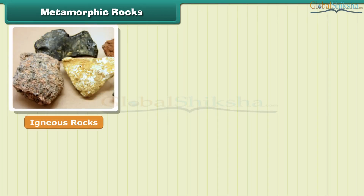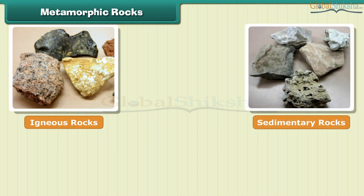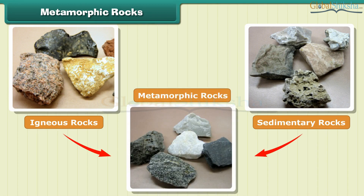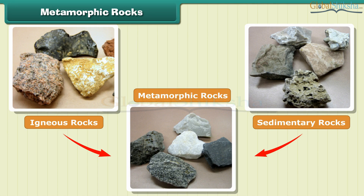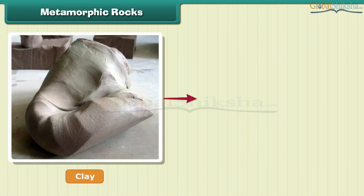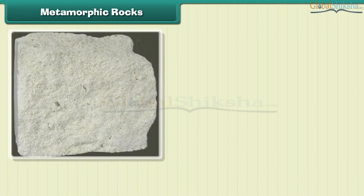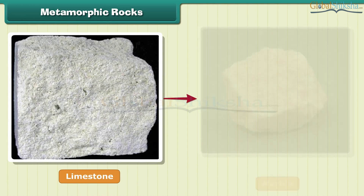The third type of rock is made out of the first two types. These are metamorphic, or changed, rocks. Igneous and sedimentary rocks can change into metamorphic rocks under great heat and pressure. For example, clay changes into slate and limestone into marble.